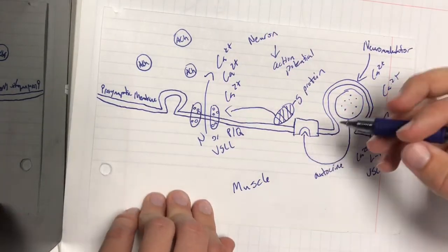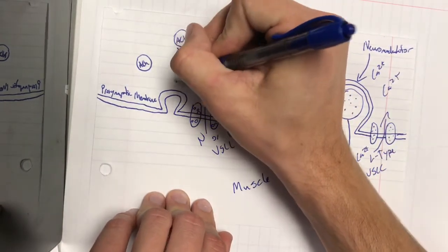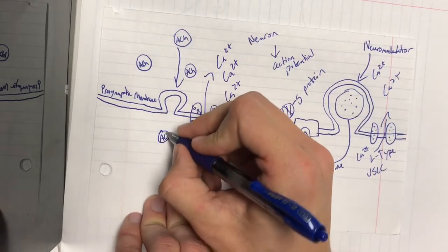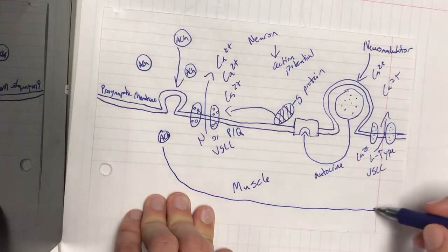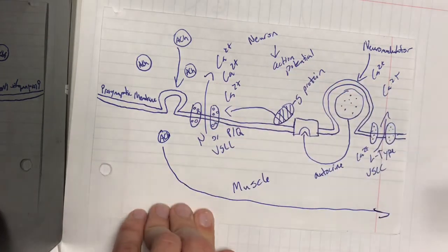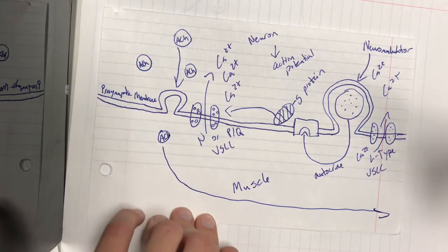And then that positive change within the neuron causes acetylcholine to fuse to the membrane and release into the neuromuscular junction. And then that continues, the acetylcholine continues down the muscle membrane until it gets to the T-tubules which causes a muscle contraction.